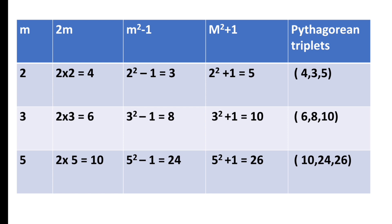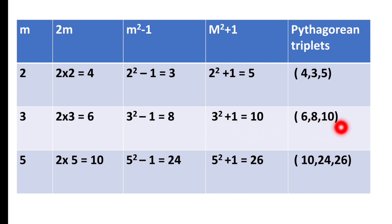When m = 3: 2×3 = 6, 3²−1 = 8, and 3²+1 = 10, so 6, 8, and 10 form another Pythagorean triplet. When m = 5: 2m = 10, m²−1 = 24, and m²+1 = 26, so 10, 24, and 26 also form a Pythagorean triplet.